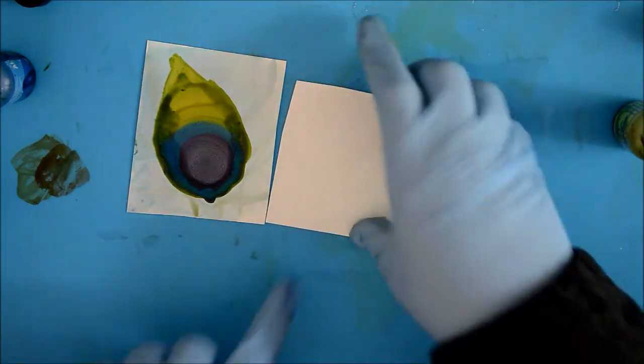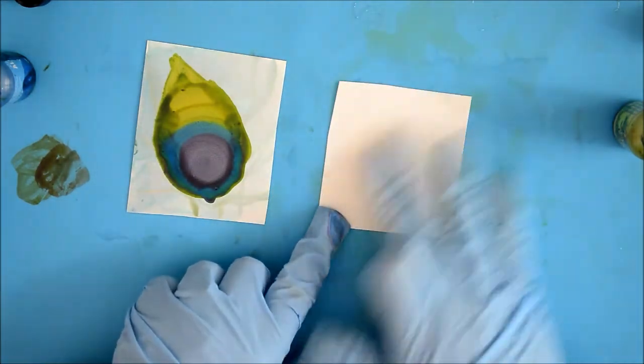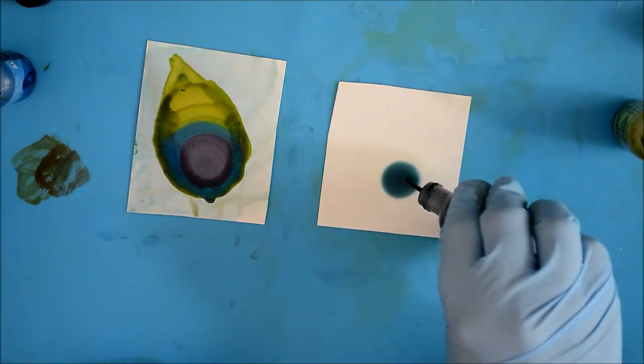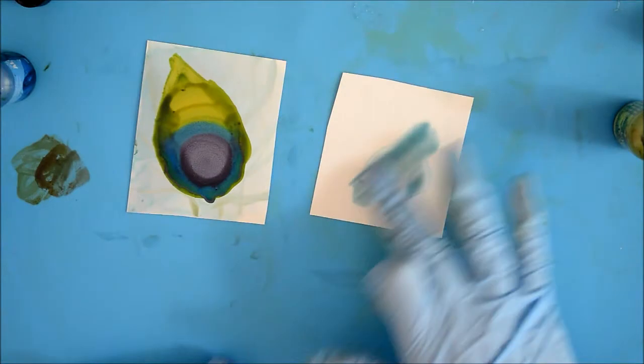I'm using some blending solution on some Yupo paper. This is just some small scrap paper and I have the colors cloudy blue. And I'm just basically filling that in on that paper.